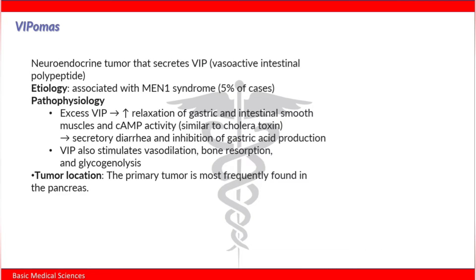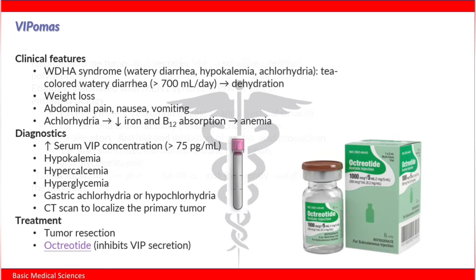VIP also stimulates vasodilation, bone resorption, and glycogenolysis — glycogenolysis is the breakdown of glycogen, producing more glucose. Tumor location: VIPomas are frequently located in the pancreas.